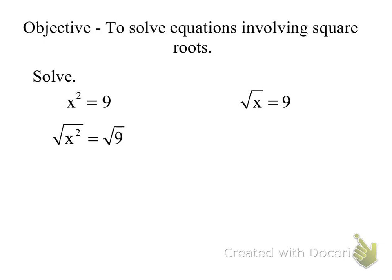We take the absolute value of x because we always have to account for that negative value. We have two possible values that will work, so to account for that we have to take the absolute value. To lose the absolute value bars, we set it equal to plus or minus 3.